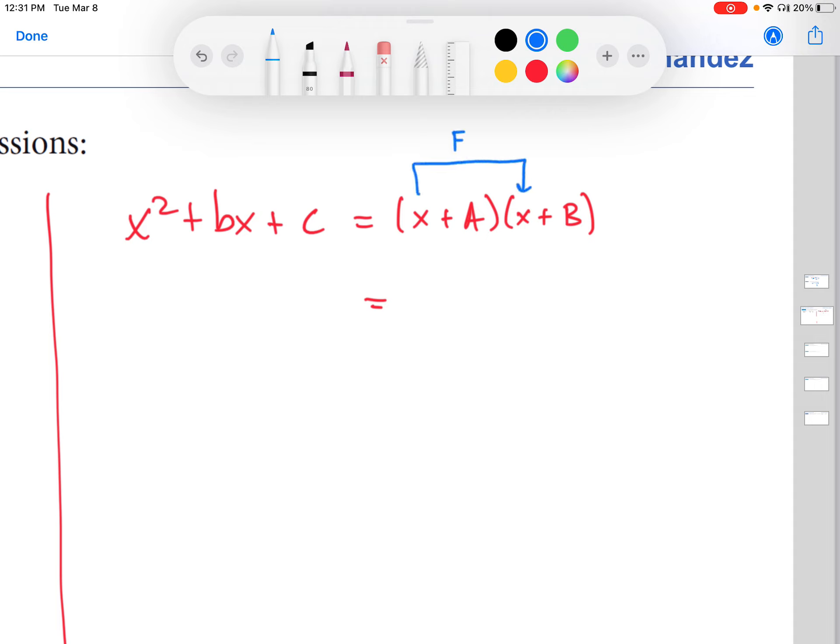This is multiplying the first two terms together. So that's going to yield x squared. Then we're going to multiply the outer terms together. That's the O. So that yields plus bx. Then we'll multiply the inner terms together. That's the I. So that yields plus ax. And then we multiply the last terms together. That's the L. So FOIL. And that yields plus AB. So we collect like terms here and we get x squared plus (A + B) times x plus AB.